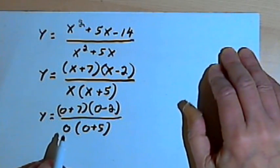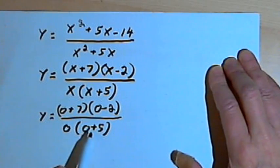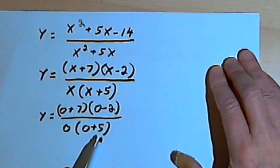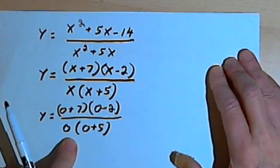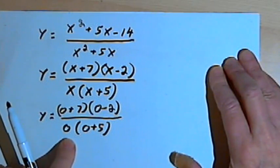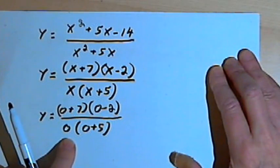Now if you think about it, this is going to be a problem, because the denominator, 0 times 0 plus 5, is going to equal 0. We can't have a 0 as a denominator. So this will not have a y-intercept. Instead, what we've got here is a vertical asymptote at x equals 0. So there is no y-intercept for this function.